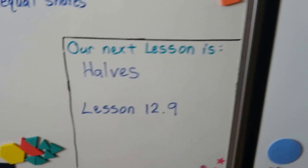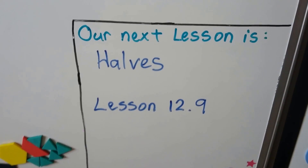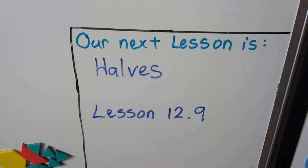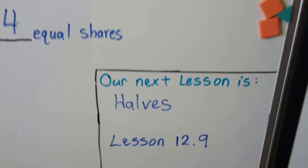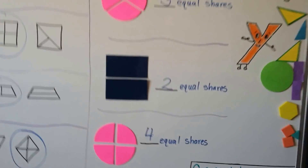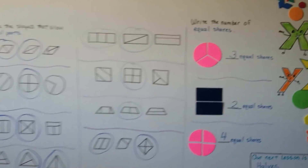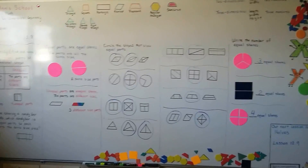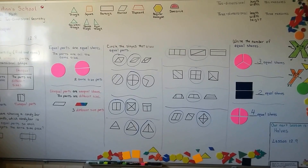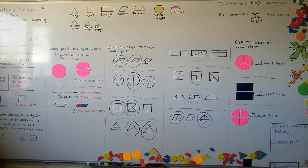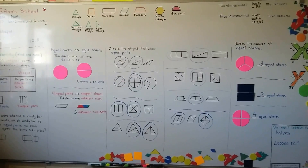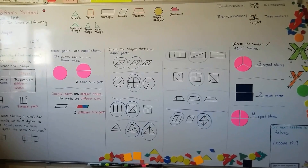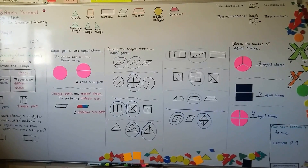In our next video, we're going to talk about halves — that's the plural for half. When you have more than one half, you have halves. That's Lesson 12.9. If you've got some drawings or some paper that you can split into equal parts, you should try. Practice and see if you can make the parts equal and how many you have. I'm really proud of you — you're doing very well. You're almost done with first grade math. I'll see you next time. Bye!